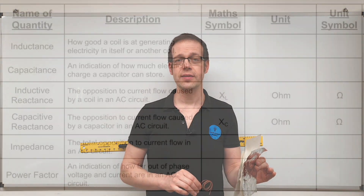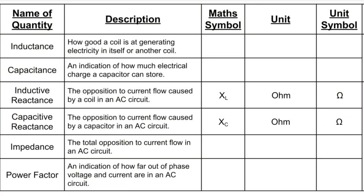Impedance is a really important unit for electricians because when you get out on site you might start doing some testing, and one of the tests you may do is an earth fault loop impedance test. The mathematical symbol we use for impedance is a capital Z. The unit is once again the ohm, since it is the total opposition to current flow in an AC circuit, and the unit symbol is the omega symbol Ω.